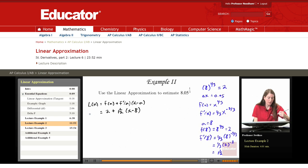And that's the equation of the line tangent to the curve at x equals 8. Now we would like L of 8.05, so we'll have 2 plus a twelfth times 8.05 minus 8. The 8.05 minus 8 represents our change, delta x.